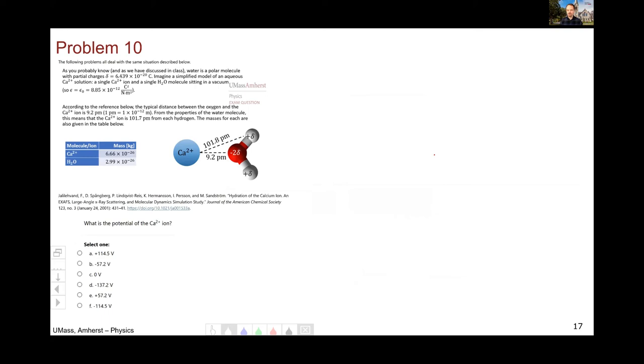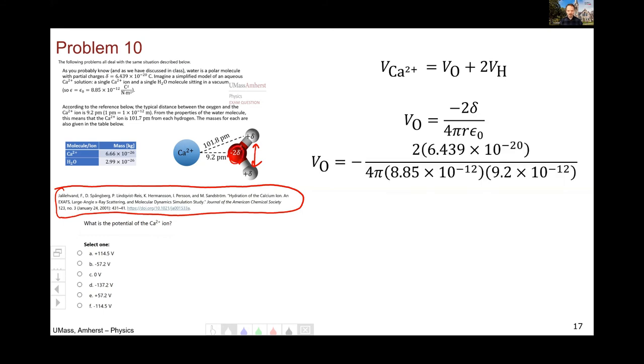Question 10 was one of the first where we really dug into the physics of what's going on in calcium and water. These numbers are totally realistic and taken from this paper. To solve for the potential of the calcium, you do the potential of the oxygen plus twice the potential of the hydrogens, because you need to remember that you have two of them. The potential of the oxygen is minus two delta because that's the charge of the oxygen. And the distance from the oxygen to the calcium is the 9.2 picometers. For the hydrogen, there's only one delta, but there is a two because you've got two different hydrogens. So you'll end up multiplying this by two at the end.